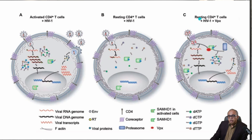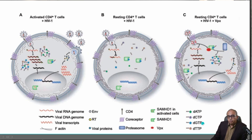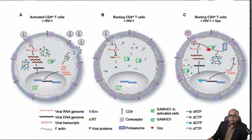You might ask: how can a resting CD4 plus T-cell in figure C still be infected? The answer is VPX — Viral Protein X — which is created by SIV and HIV-2 strains, but is not present in HIV-1. If VPX is present in the cellular environment, it is able to subdue SAMHD1, making dNTPs abundantly available so HIV can replicate and incorporate itself into the host DNA.